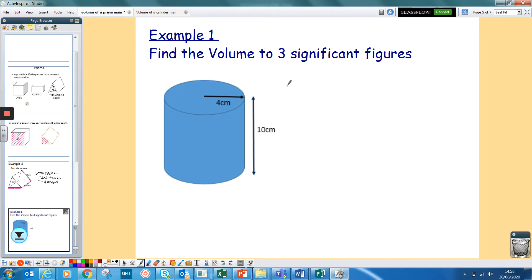So if I was going to find the volume of this, my cross-sectional area. So to find the area of a circle, hopefully you all remember this anyway, it's pi r squared. Pi times your radius squared times by how long it is, which is 10.